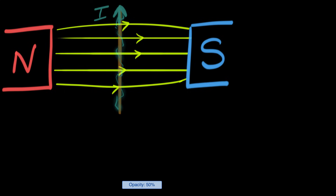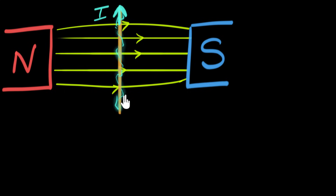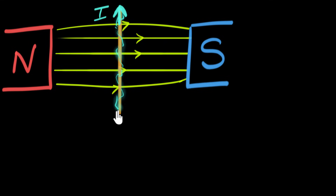In a previous video we saw that when you place a current carrying wire inside a magnetic field, that magnetic field can push on that wire — it can put a force on that wire. In this video we'll figure out the direction of this force acting on the wire.